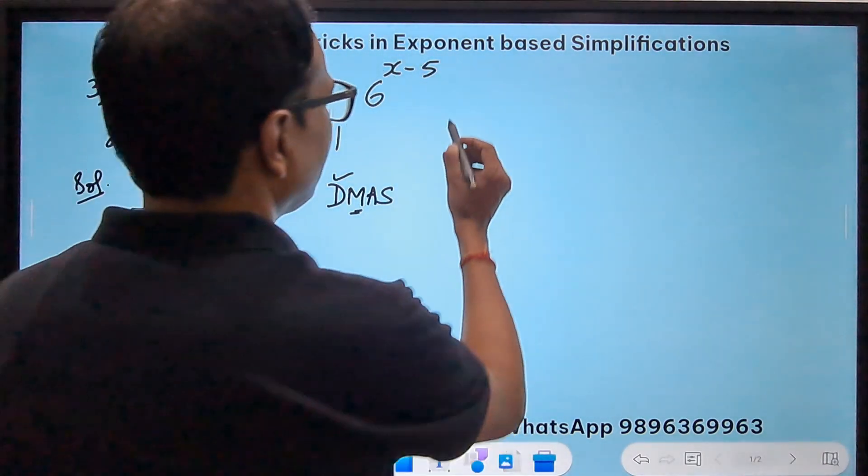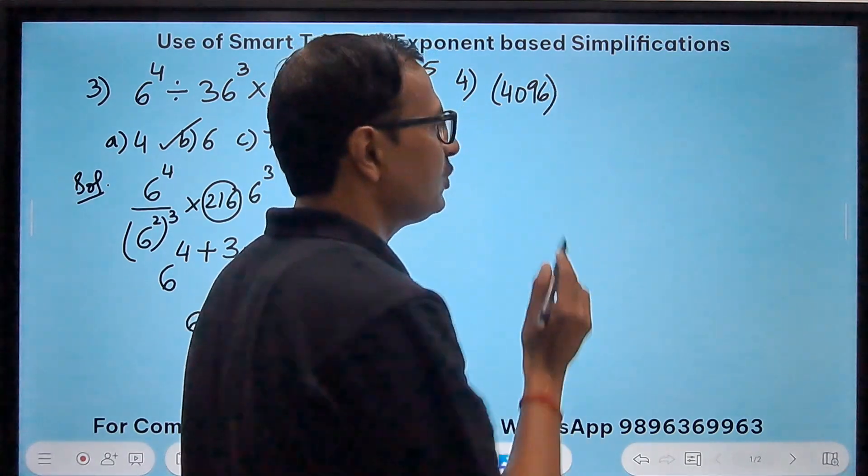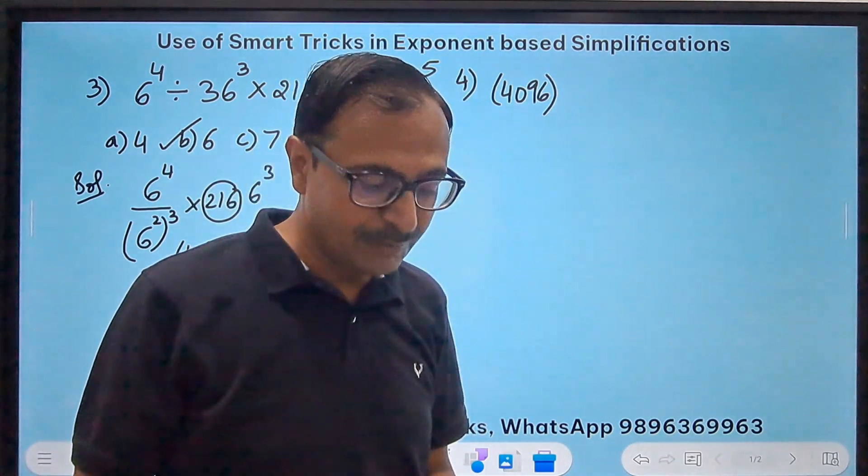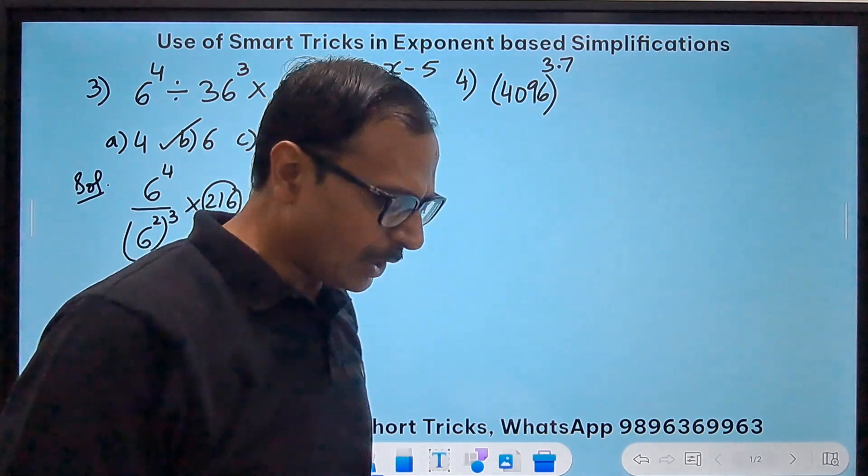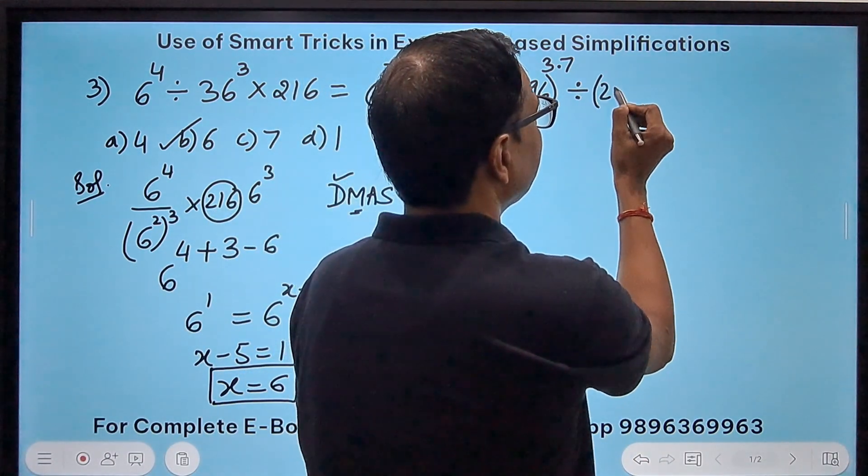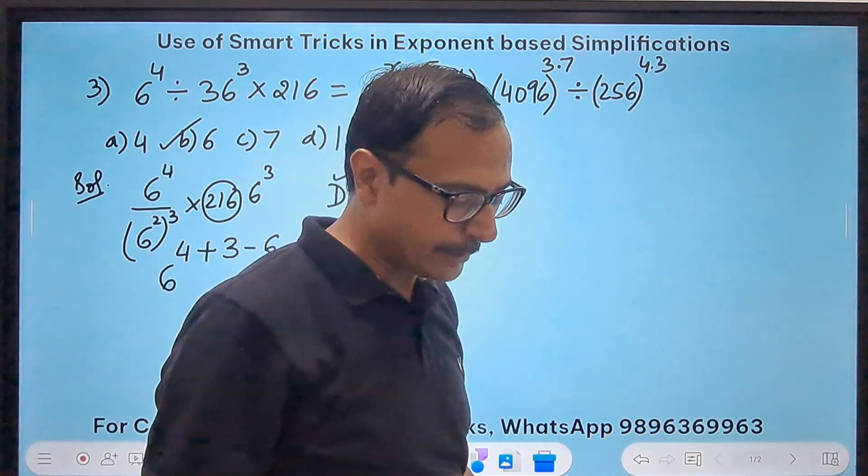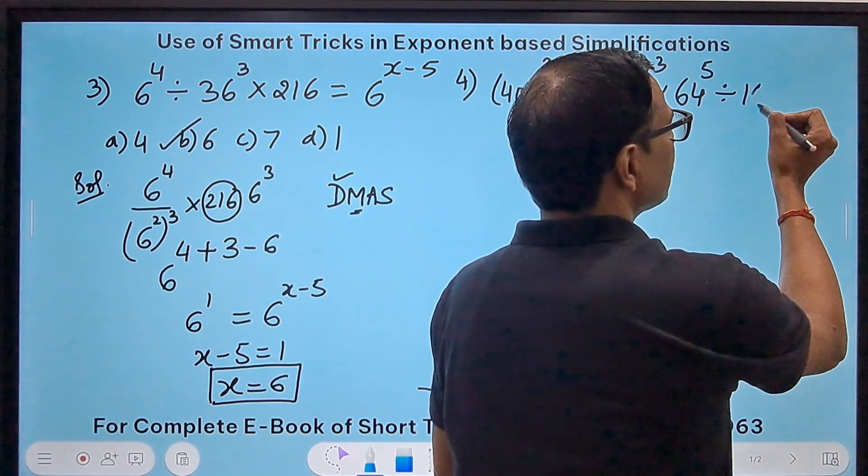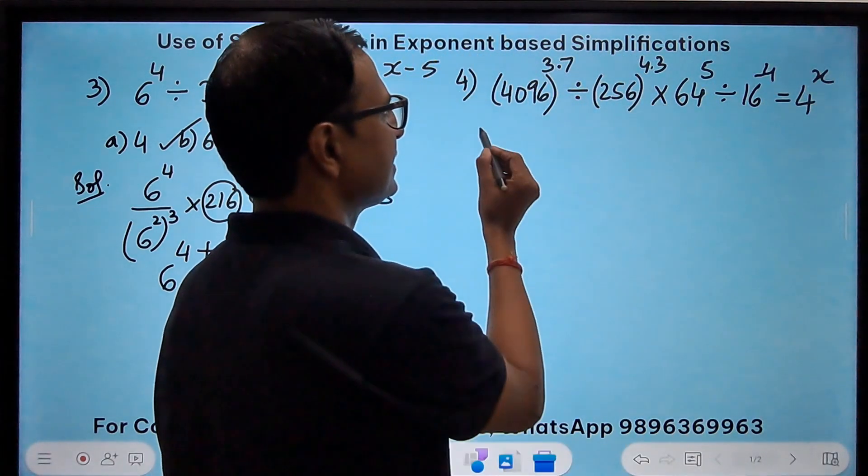Let's have one more. This is question number 4 for this video. This was third. So now we have a big number like 4096. Now immediately when you see this number 4096, you should know how to express 4096 in terms of exponents. If you fail to do that, it's trouble. And raised to power, look at the power here, 3.7. And obviously without laws of exponents, we can't simplify power 3.7. So next up we have divided by, and we have 256 and that is raised to power 4.3. So the decimal exponents are there. So we need to be more careful there. Times 64 raised to power 5. And then we have another division symbol followed by 16 raised to power -4 is equal to 4^(something) and we have to find that something.